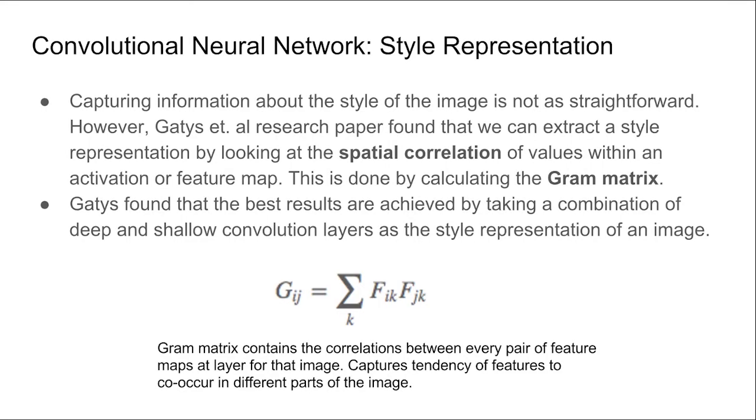Capturing information about the style of the image is not as straightforward. However, Gatys' research paper found that we can extract the style representation by looking at the spatial correlation of values within an activation or feature map. This is done by calculating the gram matrix. The gram matrix contains the correlations between every pair of feature maps at that layer for that image. It captures the tendency of features to co-occur in different parts of the image. Gatys found that the best results are achieved by taking a combination of deep and shallow convolution layers as the style representation for an image.